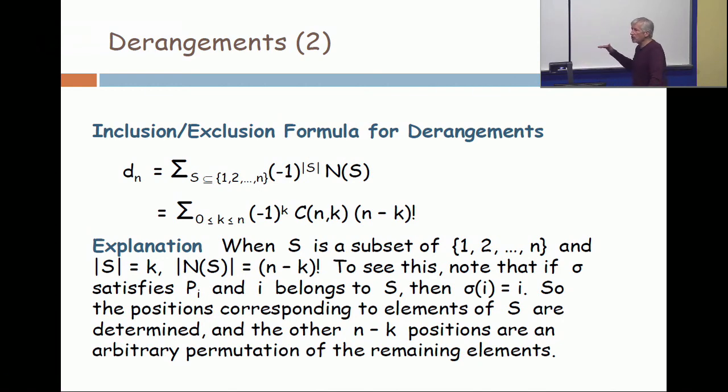we're getting this constant on the rows. All the sets that are associated with sets of size K, all those counts, those n of S are just n minus K factorial. End of story.